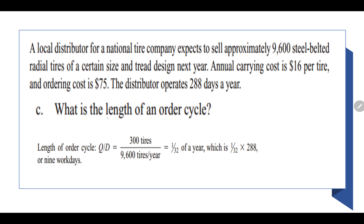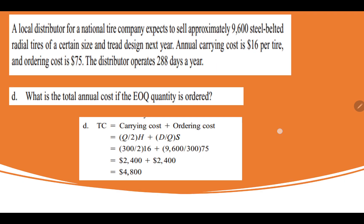What is the length of an order cycle? That is Q by D. Q is 300, D is 9,600, and you will be multiplying it by number of days in a year, which is given to you as 288 days. So 1 by 32 of a year into 288, or you can say 9 working days, is the length of the order cycle.